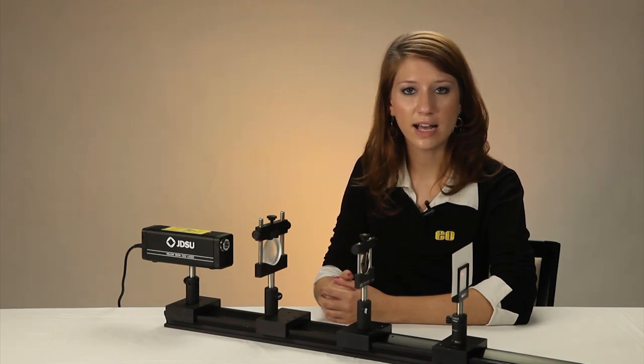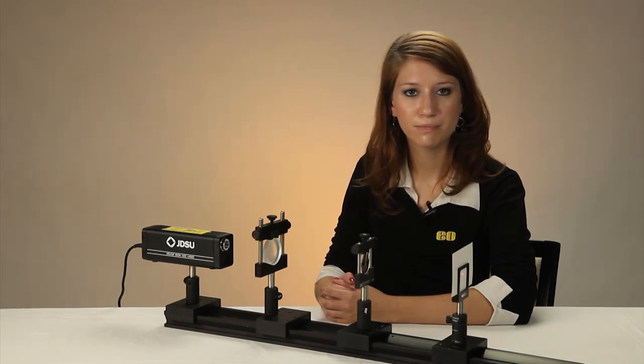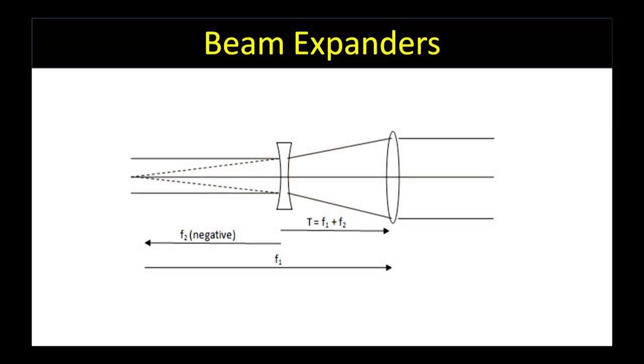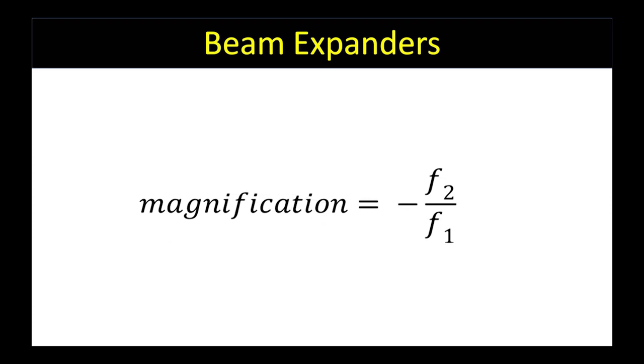Keep in mind the focal length of a negative lens is a negative number. The magnification of the beam is given by the negative ratio of the two focal lengths, so it's a positive number, as seen here.